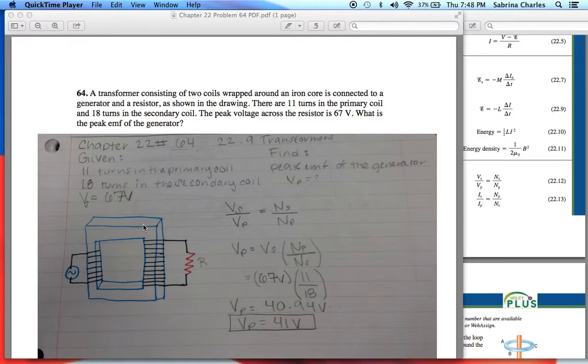This is our generator and this is our resistor, and here are the coils. There are 11 turns in the primary coil and 18 turns in the secondary coil. The peak voltage across the resistor is 67 volts. What is the peak emf of the generator? We're looking for the peak emf which is VP.